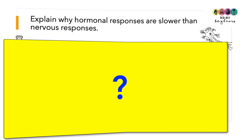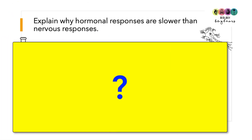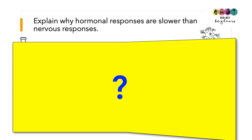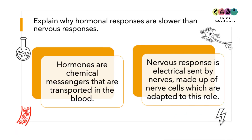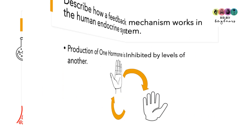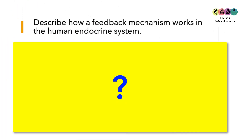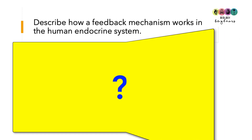The treatment for excess thyroxine is to take radioactive iodine to destroy part of the thyroid gland, or to have surgery to remove part of the gland. Next question: explain why hormonal responses are slower than nervous responses. Hormones are chemical messengers transported in the blood, so it takes longer to reach their target. The nervous response is electrical, sent by nerves made of nerve cells adapted to transmit electrical impulses very quickly.